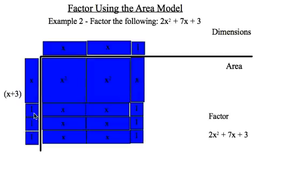First row looks good. 1 times x is x, 1 times x is x, and 1 times 1 is 1. The remaining look pretty good. So my dimensions here, I have (x + 3) and (2x + 1). So the factored form would look like that.